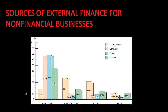In this bar graph I have data from 1970 to 2000, showing us how Canadian businesses finance their activities using external funds — that is, funds from outside of the business itself — and we're comparing this data to that of Germany, Japan, and the USA. As you can see, stocks are actually the least important source of financing for businesses. Even together, stocks and bonds are not the primary way in which businesses finance their operations.